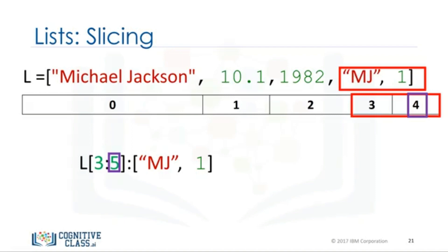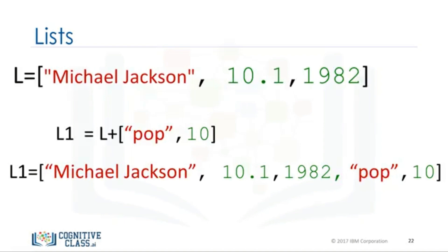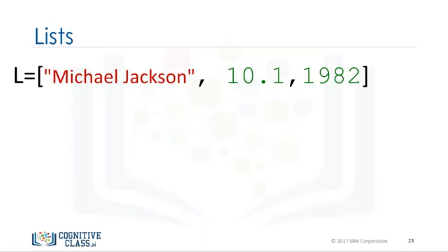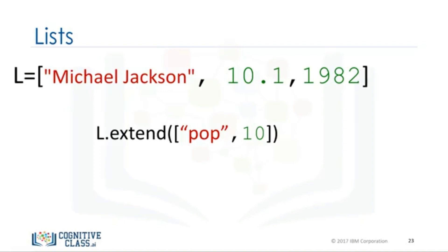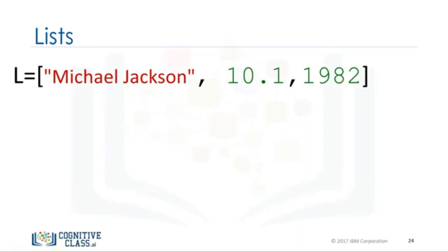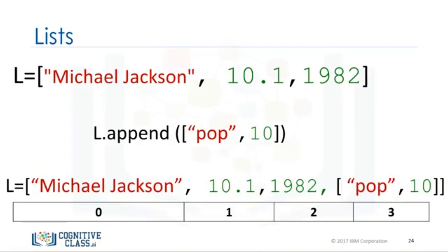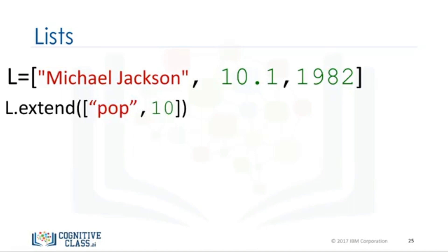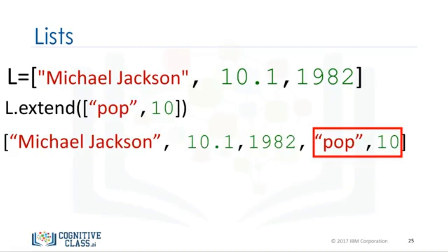Check the labs for more examples. We can concatenate or combine lists by adding them. The result is a new list with the following indices. Lists are mutable, therefore we can change them. For example, we apply the method extend by adding a dot followed by the name of the method, then parentheses. The argument inside the parentheses is a new list that we are going to concatenate to the original list. In this case, instead of creating a new list L1, the original list L is modified by adding two new elements. Another similar method is append. If we apply append instead of extend, we add one element to the list. Index 3 contains the list we appended.